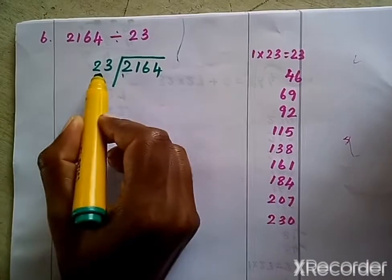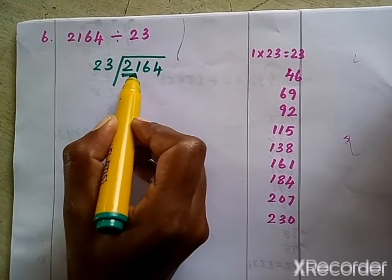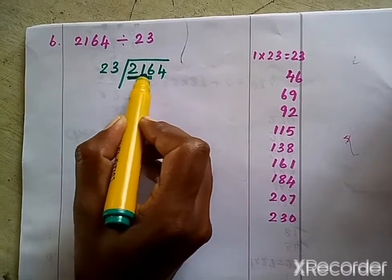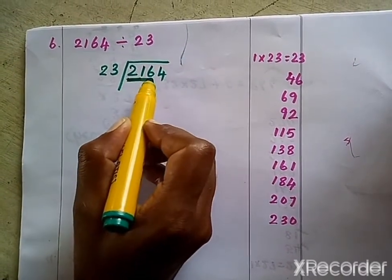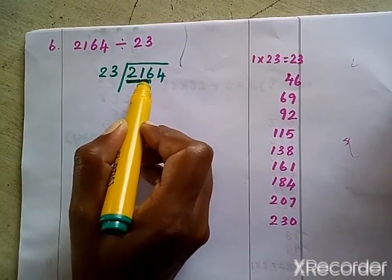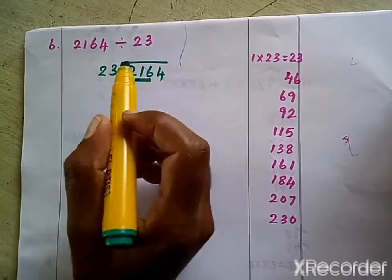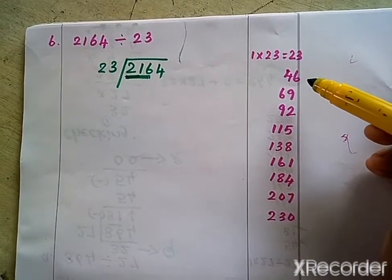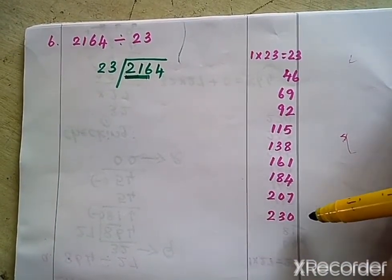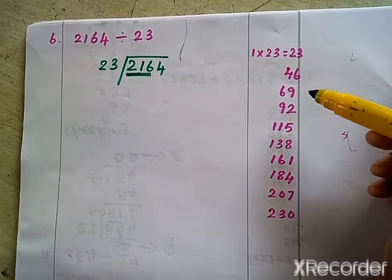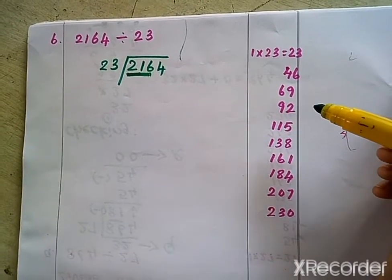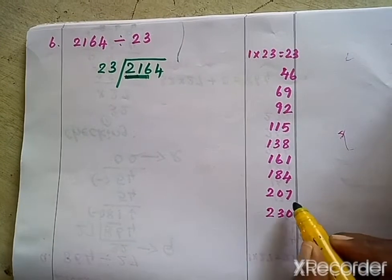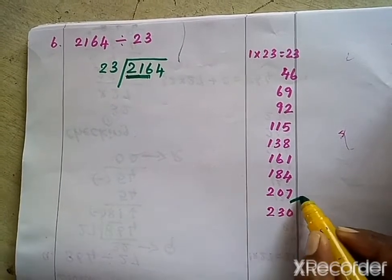The first digit is 2, which is smaller than 23, so I take 21. But 21 is also smaller than 23, so I take the first three digits together — that is 216. Now I check whether 216 is in the 23 times table. It's not there, so what is the number less than 216? I have 207.